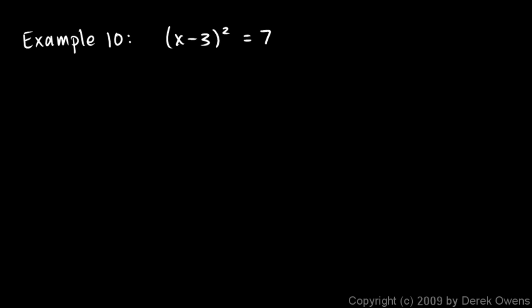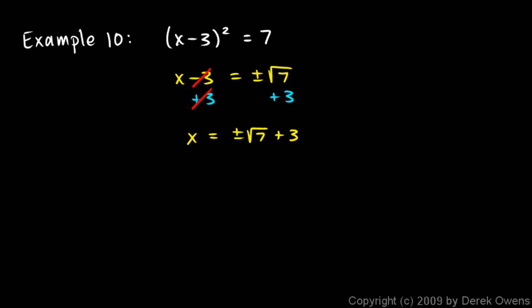When I take the square root of the left, in this case, I'm just left with x minus 3. And when I take the square root of the right, I have plus or minus the square root of 7. So I'm trying to solve for x, so I need to add 3 to isolate x, and of course I do that to both sides. On the left they cancel out, and I'm left with x is equal to plus or minus the square root of 7 plus 3.